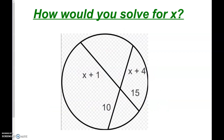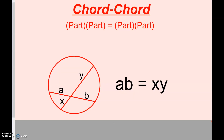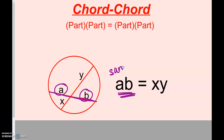So how would we solve for x? In class we would use Geometer's Sketchpad to do an experiment — measuring the length of a, the length of b, the length of x, and the length of y. Basically, you want to focus on one chord and take a times b. That equals the other chord: x times y. When chords are on the inside of a circle, take one part times the other part — keep the same chord together — and those two products are going to be equal.